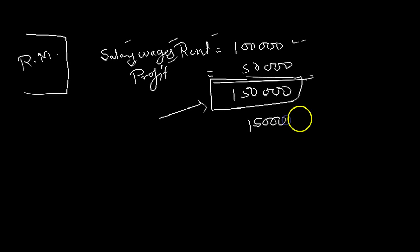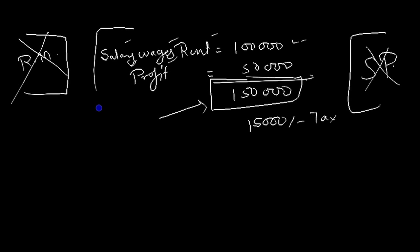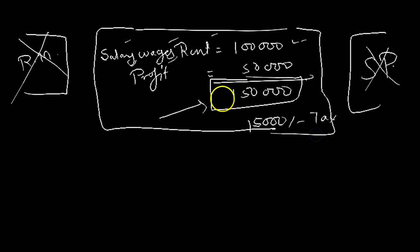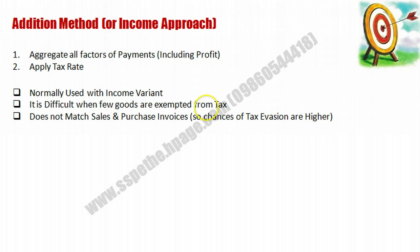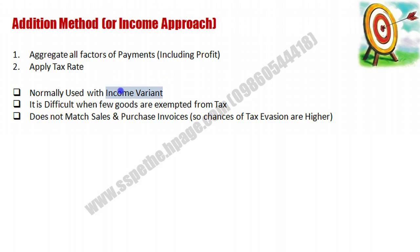10% of 1 lakh 50,000 gives a tax liability of 15,000 rupees. As you can see, raw material is not considered, and the sale price is also not considered — only the factors of payment and profit margin are aggregated and taxed. Regarding merits and demerits: the addition method is normally used with the income variant. It is difficult to apply when some goods are exempted from tax, it does not match sales and purchase invoices, and therefore the chances of tax evasion are very high in this method.